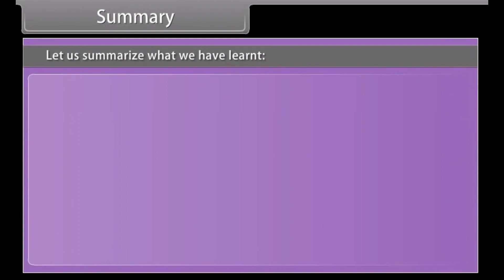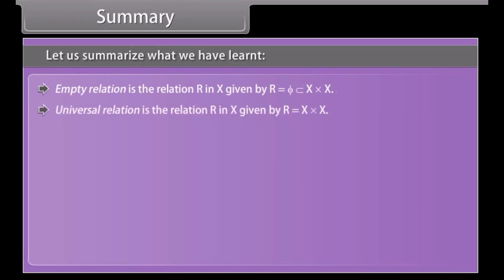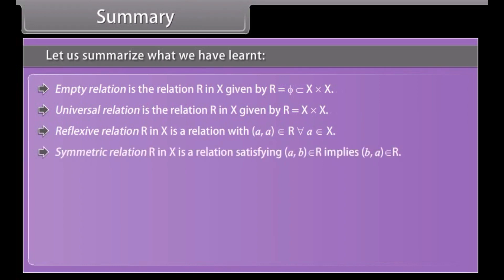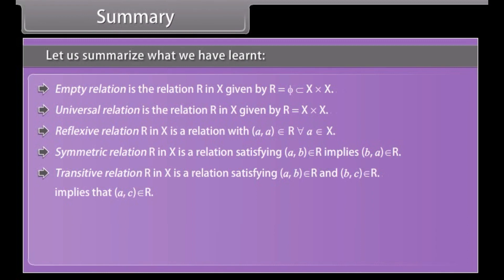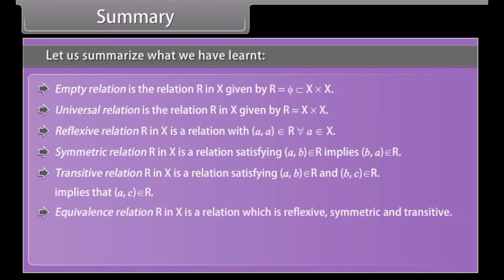Summary: Empty relation is the relation R in X given by R = null set, which is a subset of X cross X. Universal relation is the relation R in X given by R = X cross X. Reflexive relation R in X is a relation with (a, a) belonging to R for each a belonging to X. Symmetric relation R in X is a relation satisfying: (a, b) belonging to R implies (b, a) belonging to R. Transitive relation R in X is a relation satisfying: (a, b) belonging to R and (b, c) belonging to R implies (a, c) belonging to R. Equivalence relation R in X is a relation which is reflexive, symmetric, and transitive.